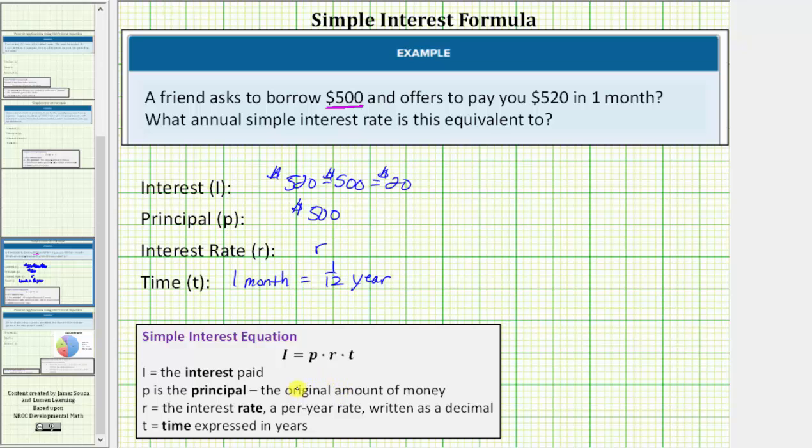And now using our equation I equals P times R times T, we would have 20 equals the principal, which is 500, times the unknown interest rate R, times the time, which is one twelfth of a year.